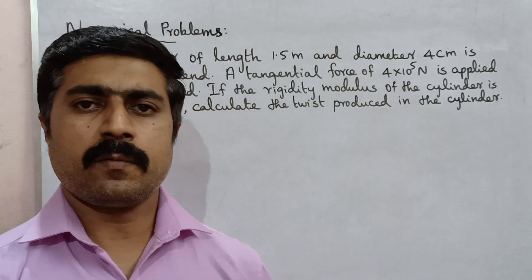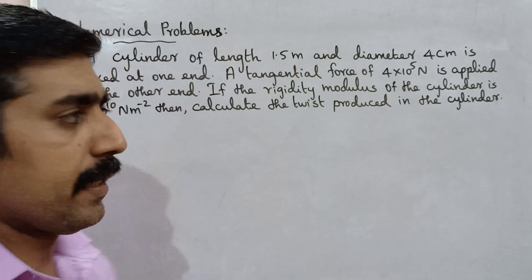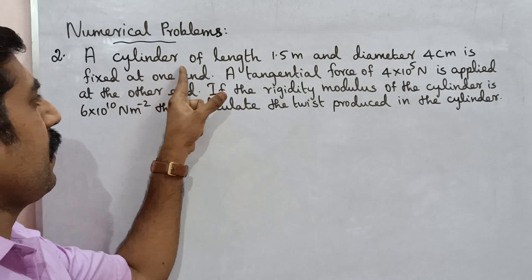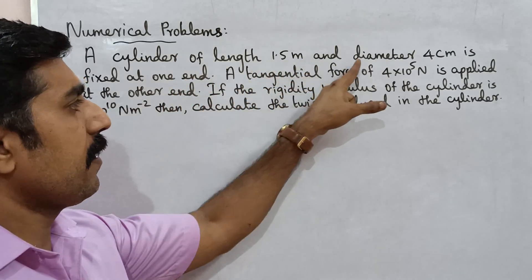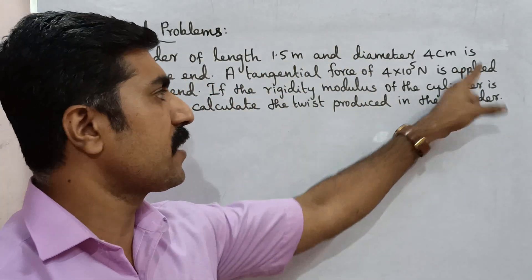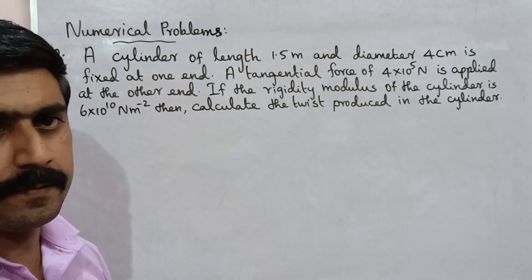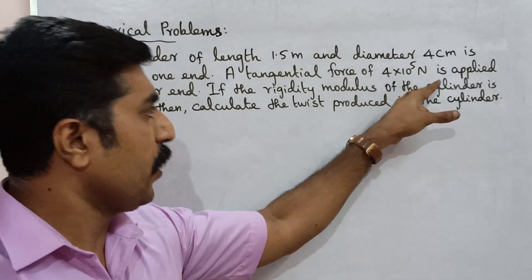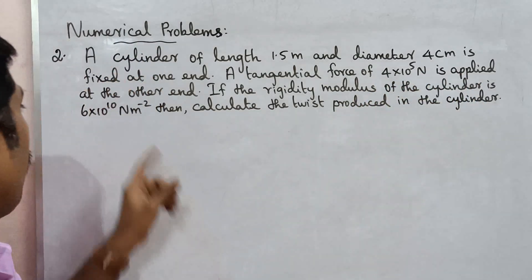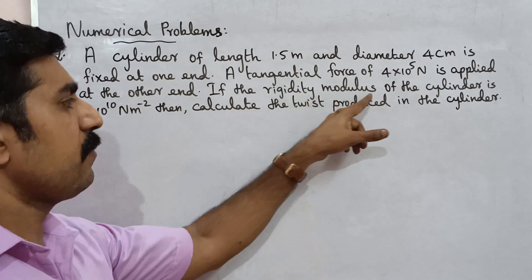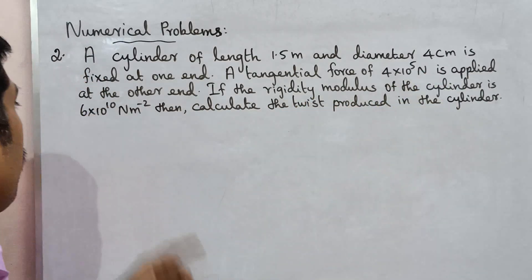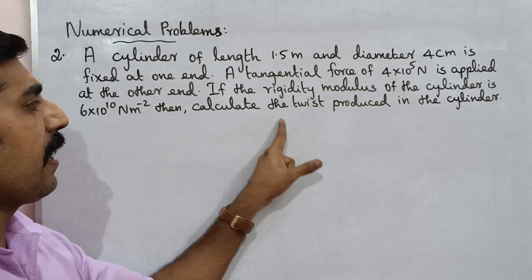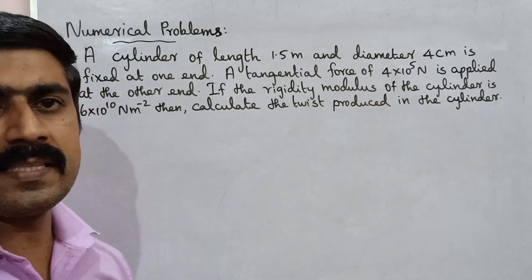Hi students, now we have a simple problem. See problem number 2. A cylinder of length 1.5 meter and diameter 4 centimeter is fixed at one end. A tangential force of 4 into 10 power 5 Newton is applied at the other end. If the rigidity modulus of the cylinder is 6 into 10 power 10 Newton meter power minus 2, then calculate the twist produced in the cylinder.